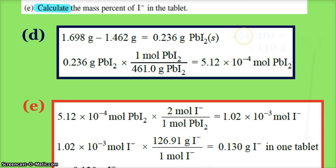Another way you could do this: when you look at the formula PbI₂, 254 is the mass accounted for by the iodide ions, 461 is the total mass, and so that gives us the percent iodide, which then takes us to the 0.130 grams of iodide.